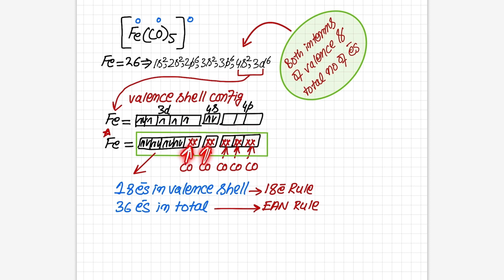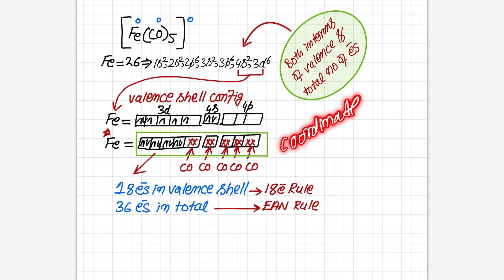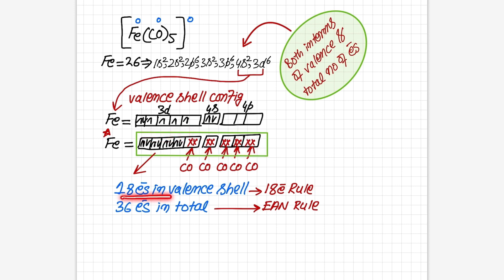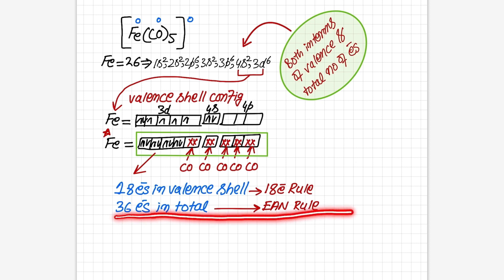Five empty orbitals are formed, and each CO ligand donates its lone pair via coordinate covalent bond into these empty orbitals. A total of 10 electrons are shared this way. Now counting the total electrons in the valence shell: 8 from iron itself plus 10 contributed by 5 CO molecules gives 18 electrons — that is the 18-electron rule. But looking at total electrons including inner shells: 18 valence electrons plus the remaining inner-shell electrons gives a total of 36 — so 36 is the Effective Atomic Number.